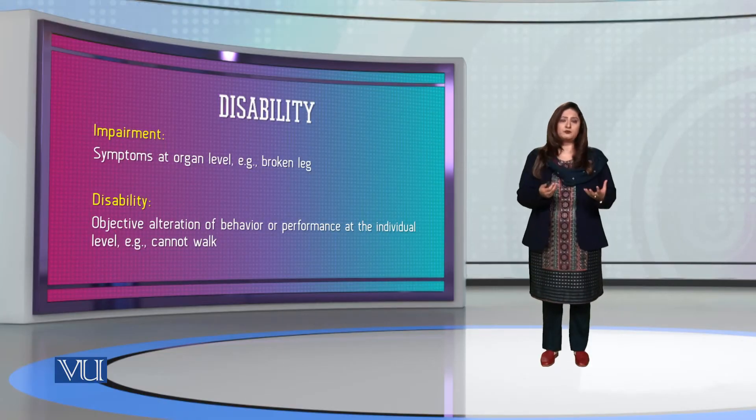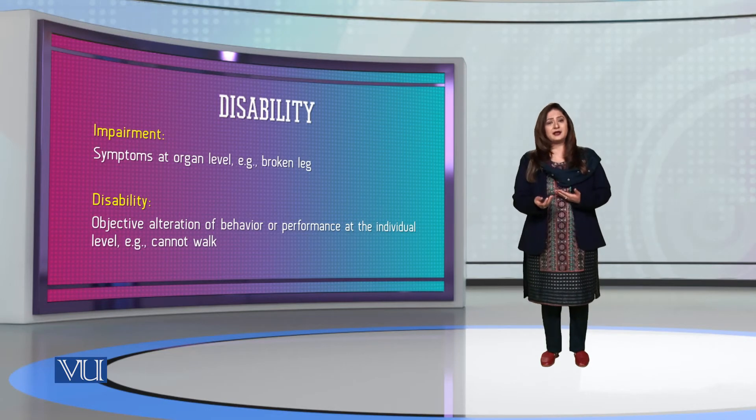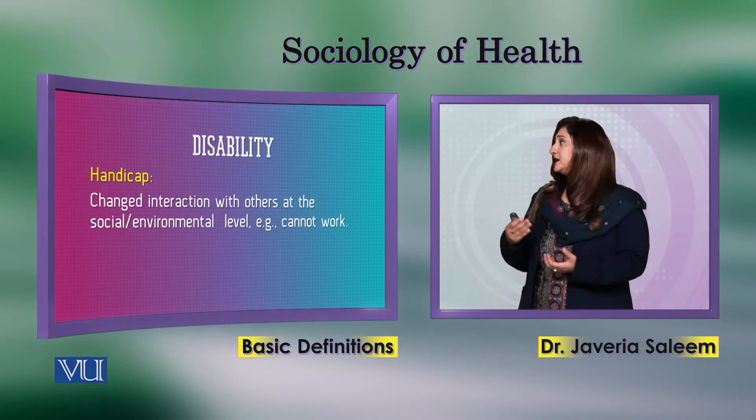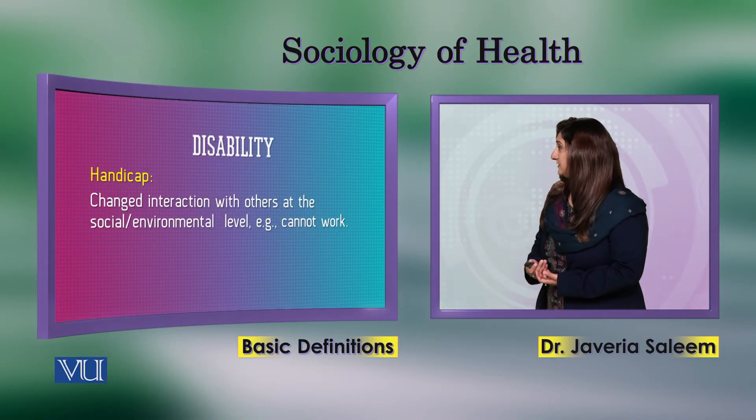Disability is an objective alteration of behavior or performance at the individual level. For example, because of the fracture, the person cannot walk — that inability to walk is the disability. This then changes their interaction with others at the social and environmental level; they cannot move or go places independently.